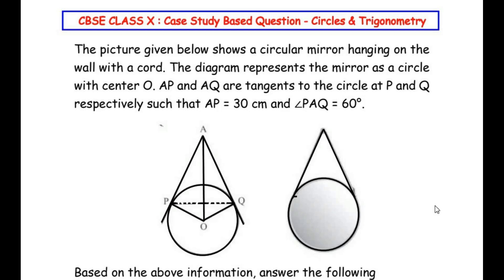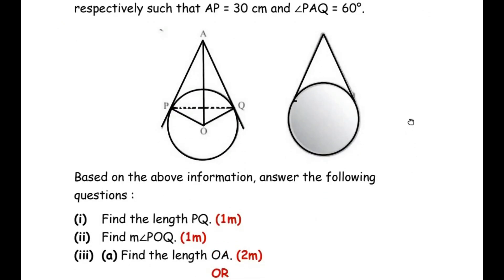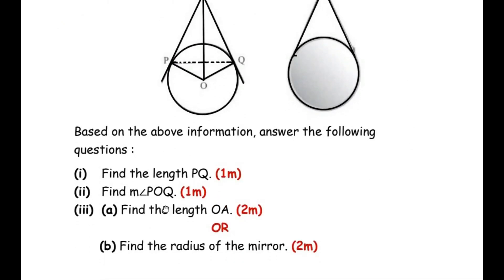Hello and welcome to my channel. In this video we are going to solve a case study based question which is a combination of circles and trigonometry. This question has three sub-questions: the first sub-question is of one mark, the second sub-question is of one mark, and the third sub-question has an OR question as well and it is for two marks. Let us start with the first sub-question.